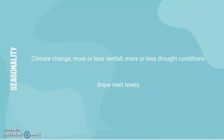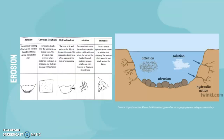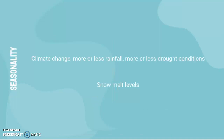Finally, looking at seasonality: climate change impacts river processes — more or less rainfall or drought conditions can affect river discharge, thus impacting velocity and the force of the river. Even acid rain can impact the process of solution, which applies to both transportation and erosion. Snowmelt levels also impact river discharge.